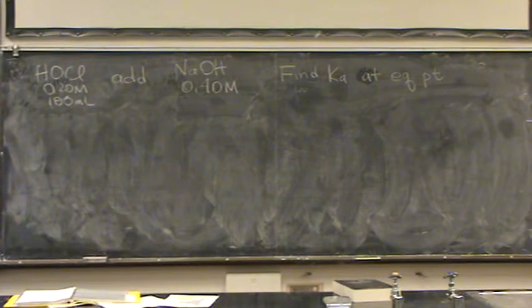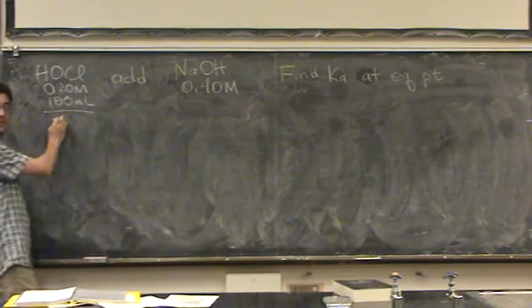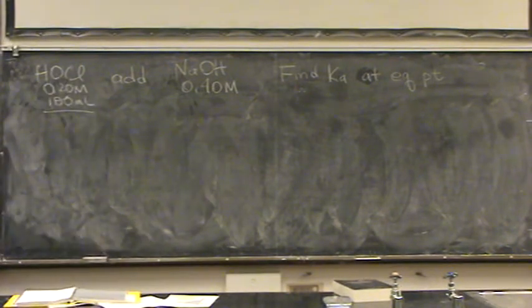Here what you do is really similar to the previous problem we did, it's just the reverse of it. I'm not given Ka, but I'm told it's at that equivalence point. So what you do in this case, at the equivalence point, you know that the millimoles of acid equals the millimoles of base. I want to find that volume.